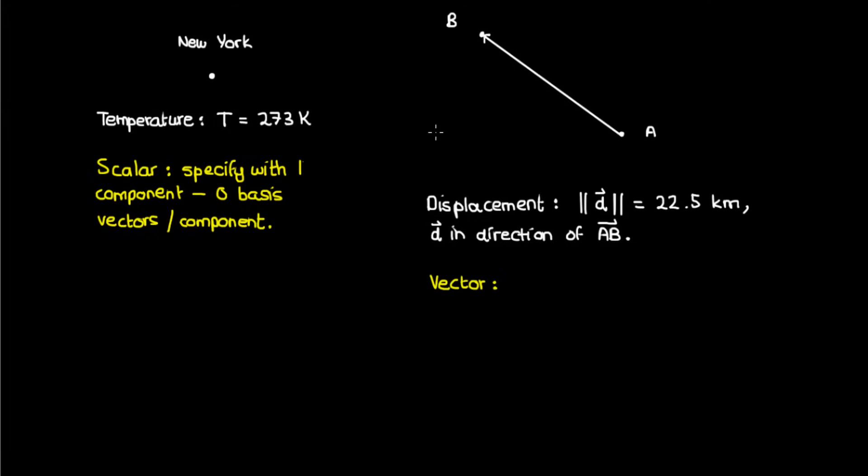One thing about this vector is that I can actually break it up into three components, because I'm in three dimensions. So if I had a coordinate system where the x-axis was going from west to east, the y-axis was going from south to north, and the z-axis was going from up to down, then I could specify the displacement using three components. For instance, I could say that in order to go from A to B, you should go 19 kilometers west, 12 kilometers north, and about 0.45 kilometers up.